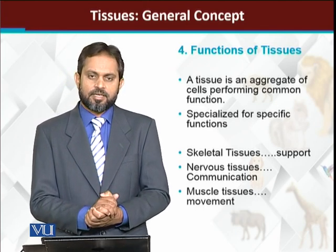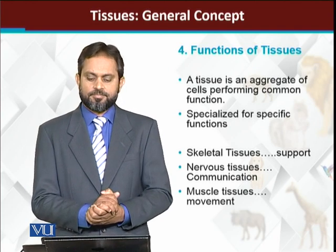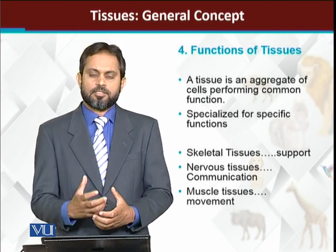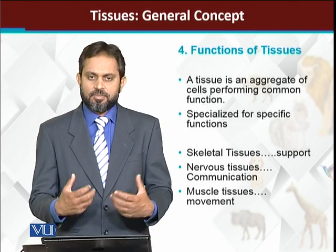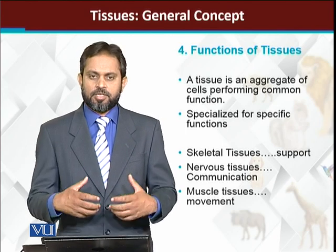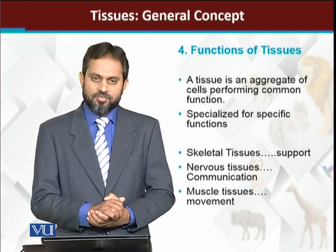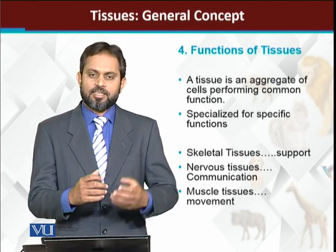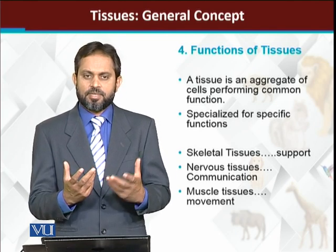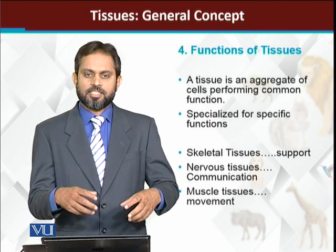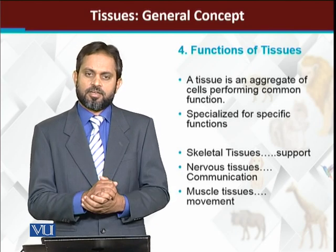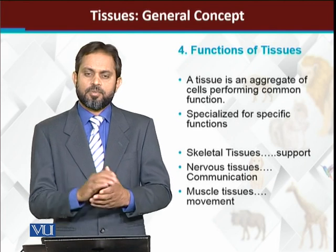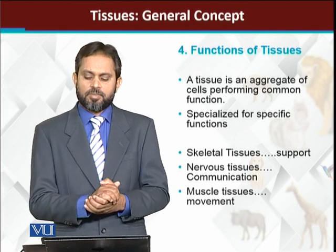For example, skeletal tissues — their job is to provide support and form the skeleton, giving support to our body. Nervous tissues — their job is to make communication between different body parts. The brain's function is to communicate with all body parts, and so the function of nervous tissues is to make communication between the different body parts.